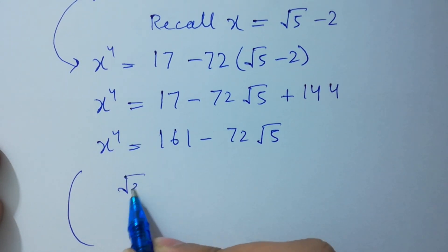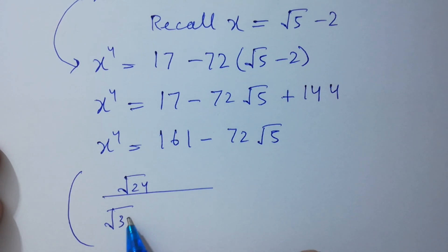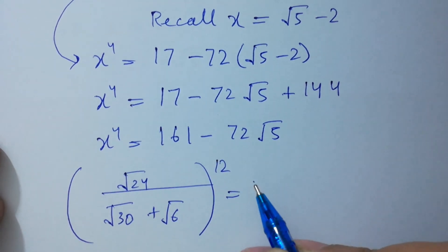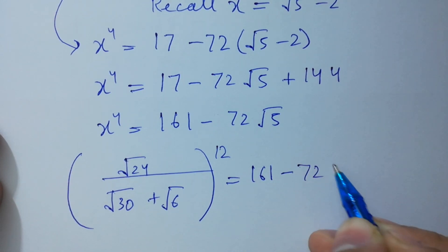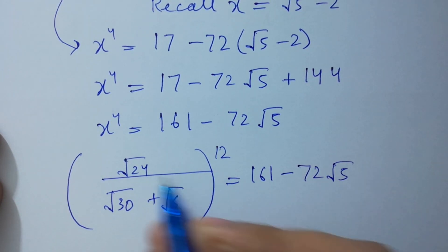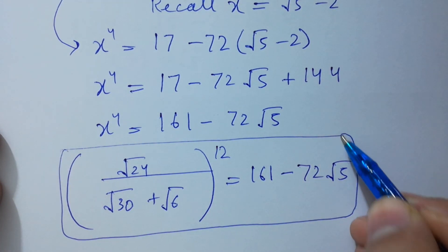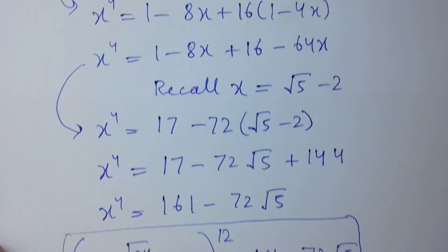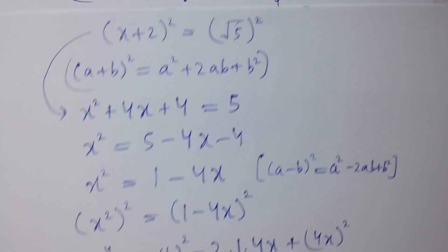So finally, square root of 24 over (square root of 30 plus square root of 6), to the whole power 12, equals 161 minus 72·square root of 5. We have solved this without using any calculator.